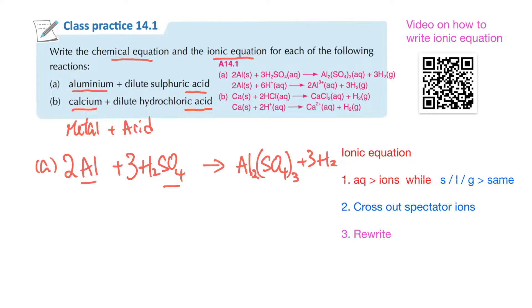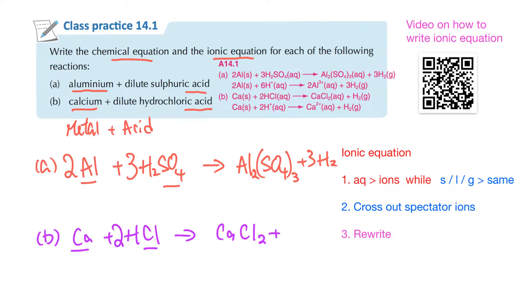Part B is the reaction between calcium and hydrochloric acid. The product formed is calcium chloride, CaCl₂, because Ca is 2+ and Cl is 1−. Check the ratio: 1 to 2, so you need 2HCl. The product also includes hydrogen. To write the ionic equation, for aqueous state you separate into ions, while solid, liquid, or gas remains unchanged.